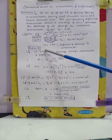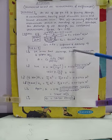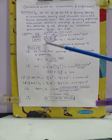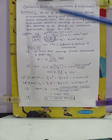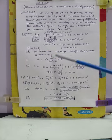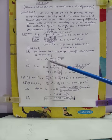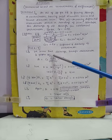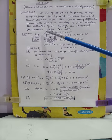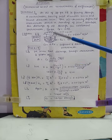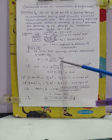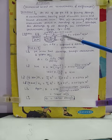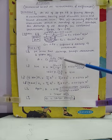We have to find the discharge of this venturi meter. We know that discharge of venturi meter is given by: Q = Cd × a1 × a2 × √(2gh) / √(a1² − a2²). Here a1 is the cross-sectional area of the pipe, a2 is the cross-sectional area of the throat, g is acceleration due to gravity, and h is the differential head — since it is a horizontal venturi meter, h represents the pressure head difference.